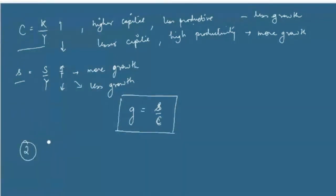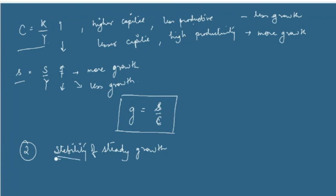The second question Harrod pointed out is the stability of this steady growth — whether, once you reach this level of growth rate, the process is stable or not. This is the element we are primarily discussing in this reading: the instability of the Harrod Model.